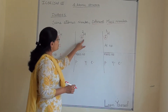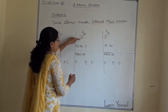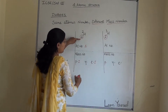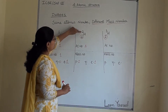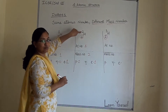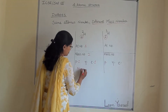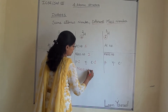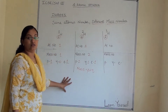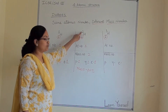Here is deuterium. The atomic number is one, so the proton count is one and the electron count is one. But the mass number is two. Why? Because atomic mass equals protons plus neutrons. So the neutron count must be one — one plus one equals two.